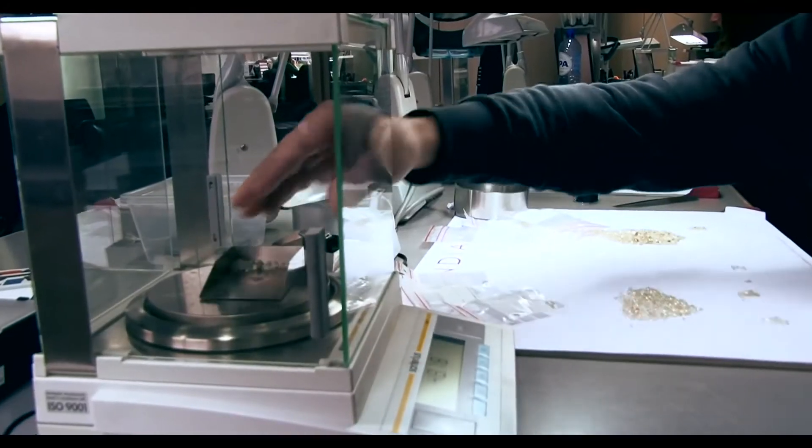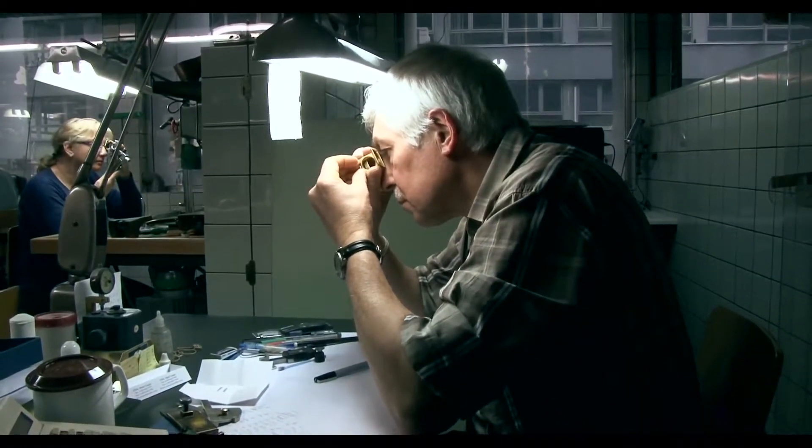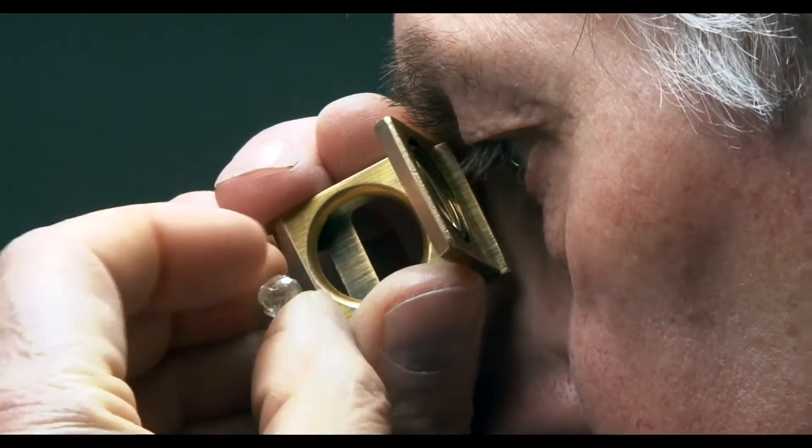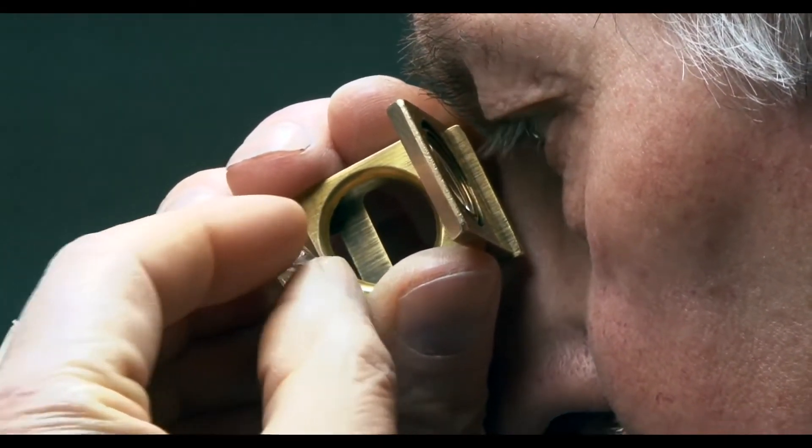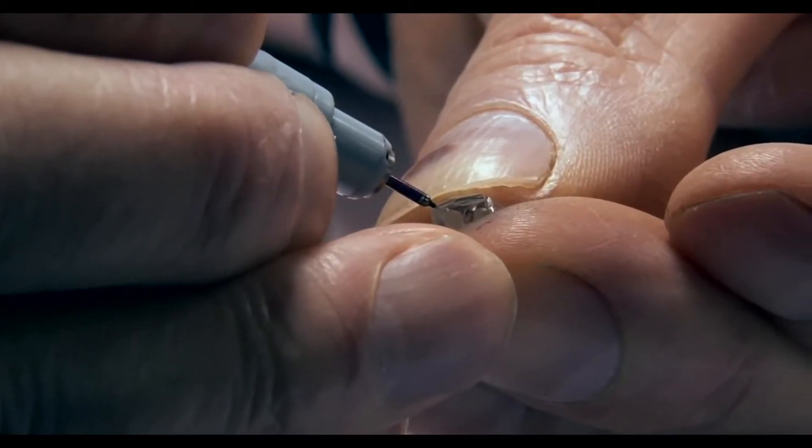Once the rough has been sorted, the parcels are handed over to the head of polishing. It's now their job to assess each rough diamond individually and to create a cutting plan which details exactly the size and angle of every facet for the diamond.